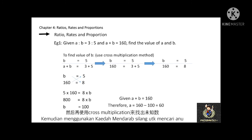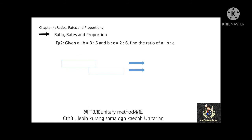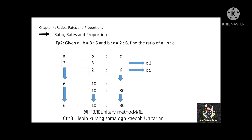Given a to b equals 3 to 5 and b to c equals 2 to 6, find the ratio of a to b to c. Step by step: multiply the ratio 3 to 5 by 2 and the ratio 2 to 6 by 5. This makes the quantity b equal to 10 in both ratios. We can then rewrite the combined ratio as 6 to 10 to 30, which is the ratio of a to b to c.